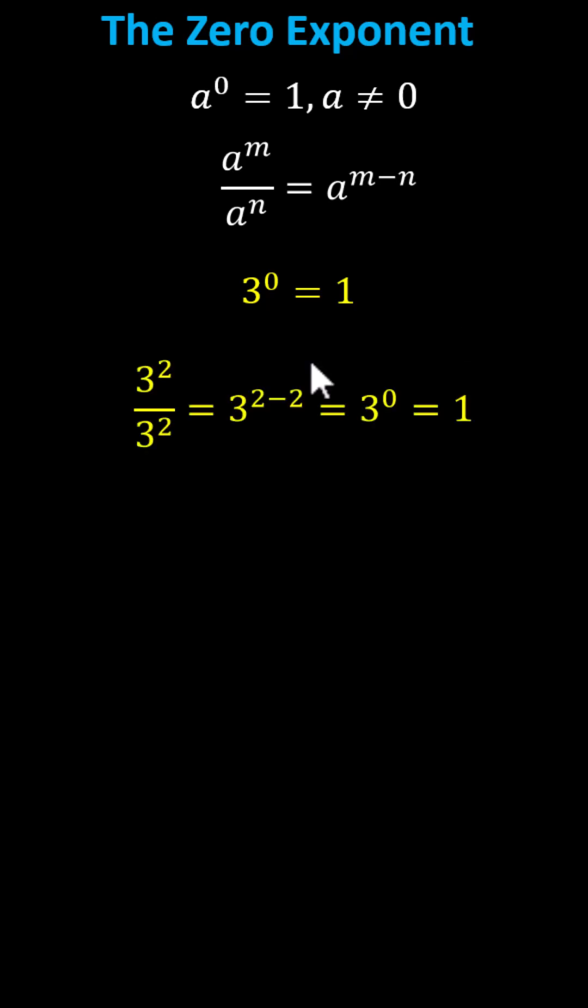Let's consider three squared divided by three squared. We know any nonzero value divided by itself, or in this case nine divided by nine, must equal one.